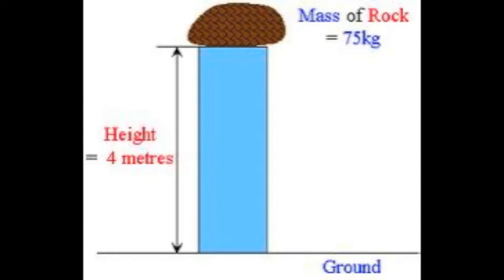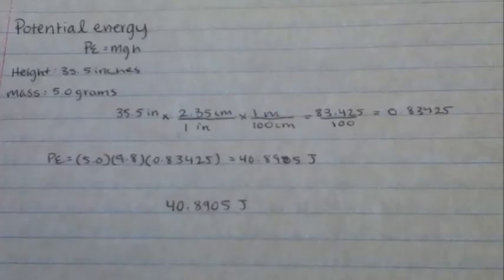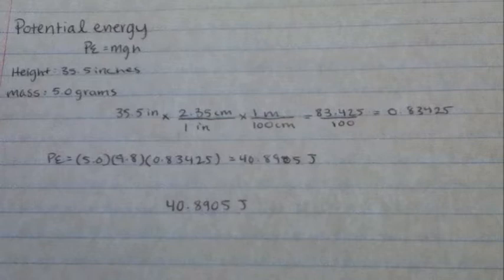Calculate how much gravitational potential energy the apparatus begins with — in other words, how much energy do you give the apparatus when you first drop the marble in? Use the flag's resting position as your zero reference level. To calculate the gravitational potential energy that the marble has when we initially drop it into the apparatus, we used the equation PE equals MGH. We measured the height to be approximately 0.83 meters off the ground from the zero reference level. We then multiplied this by the mass of the marble, 5.0 grams, and the gravitational constant 9.8. We came up with 40.8905 joules of potential energy.